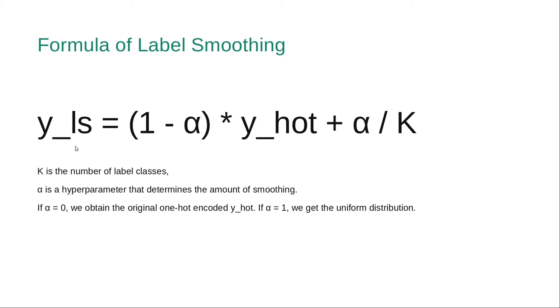On the right hand side I multiply y_hot by (1 - α) plus α / K. Here K is the number of label classes and α is a hyperparameter that determines the amount of smoothing. So obviously from this expression we can see if α = 0 then we obtain the original one-hot encoded y_hot, and if α = 1 we get the uniform distribution.